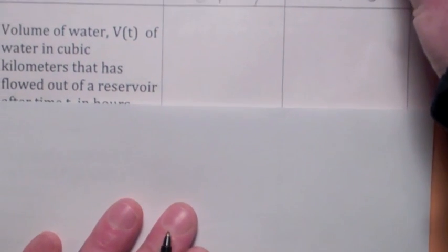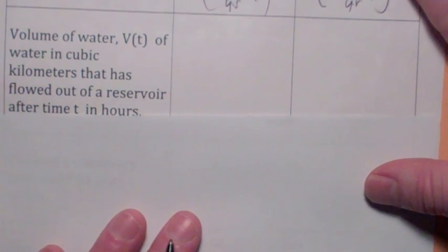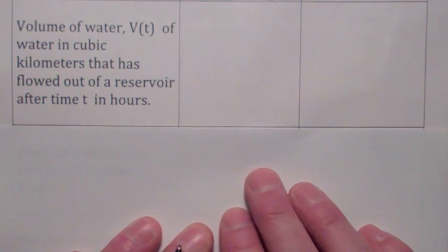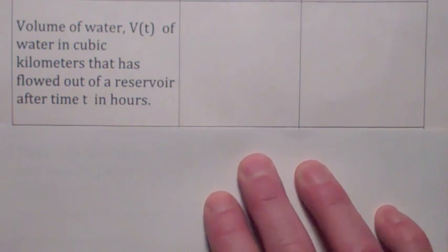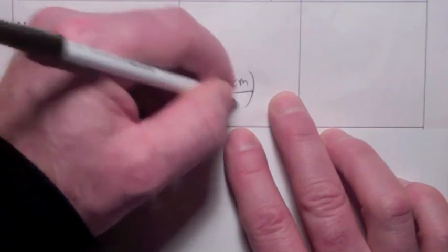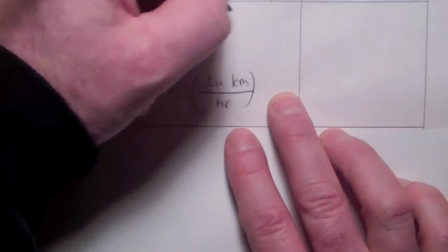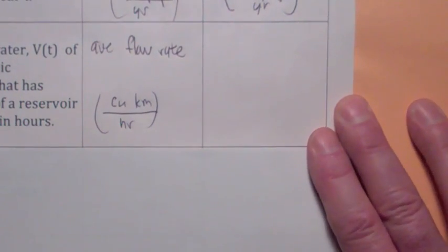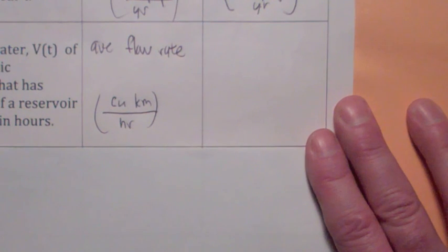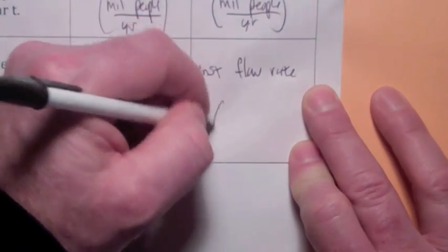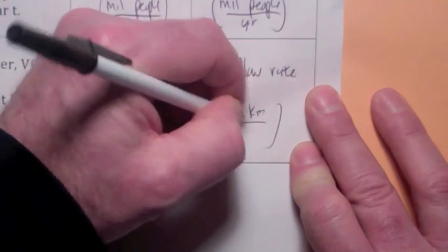What if the function is the volume of water? Let's say v(t) represents the total volume of water that's flowed out of a reservoir after t hours, measured in cubic kilometers. Look at the units — cubic kilometers per hour. Isn't that the average flow rate? And then as the time interval gets small, what is the limit as delta t goes to zero of the average flow rate? Wouldn't that be the instantaneous flow rate? The units would be cubic kilometers per hour.